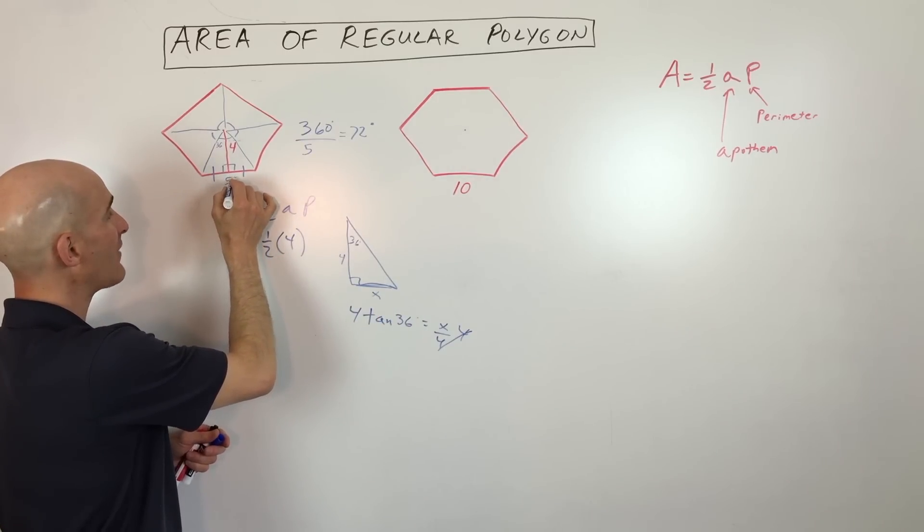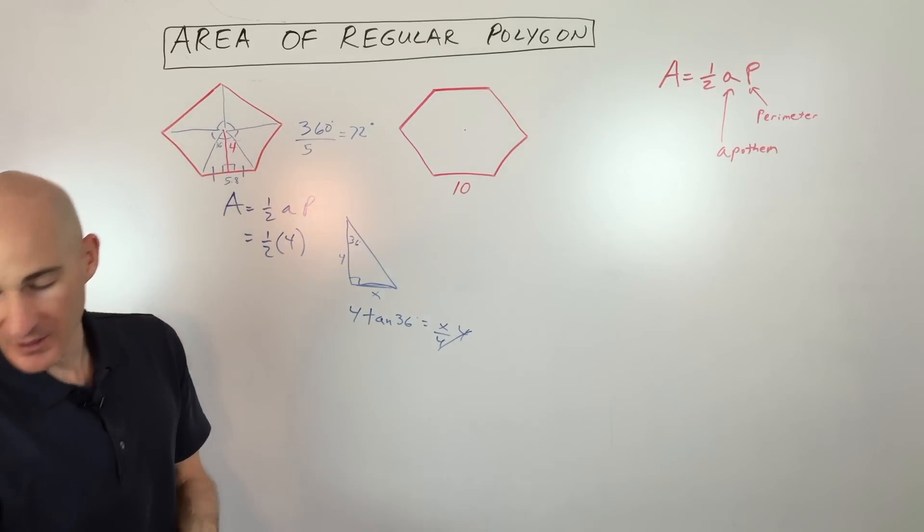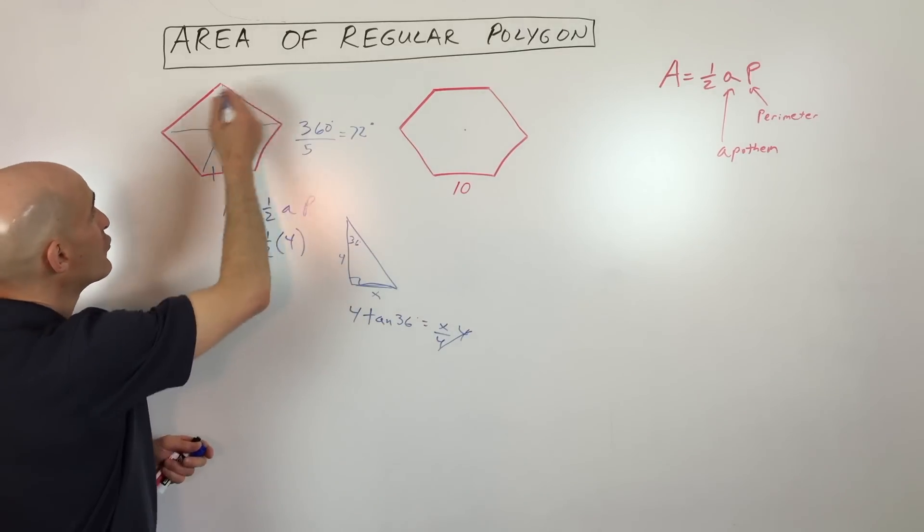This is also 2.9, so that's 5.8. Now if we multiply 5.8 times 5, let's do that real quick, 5.8 times 5, that comes out to 29. So the perimeter is 29.